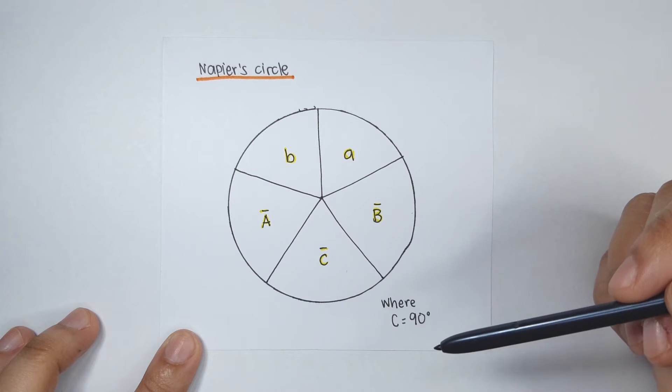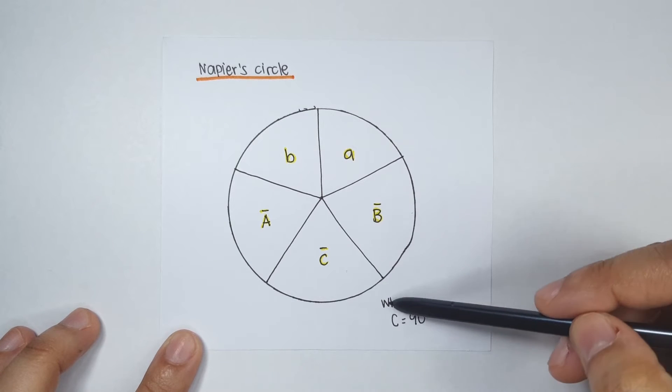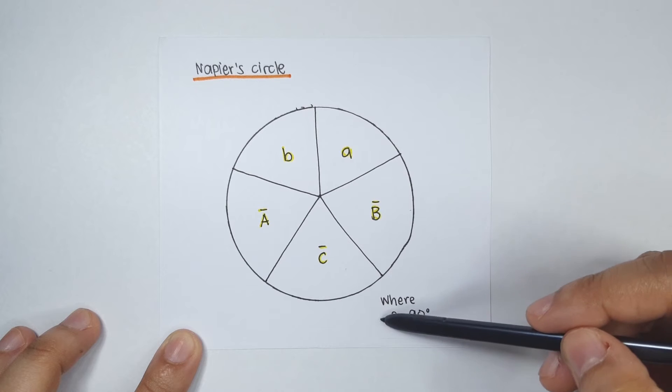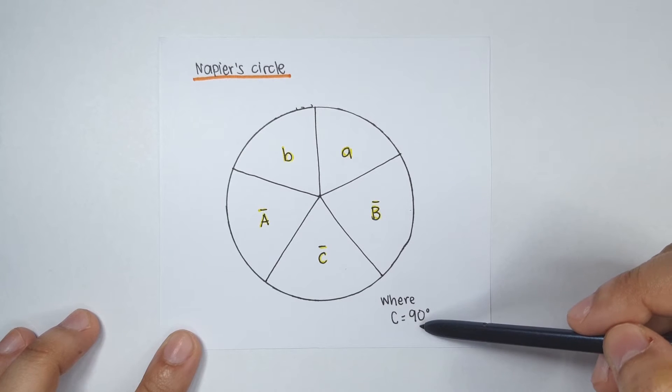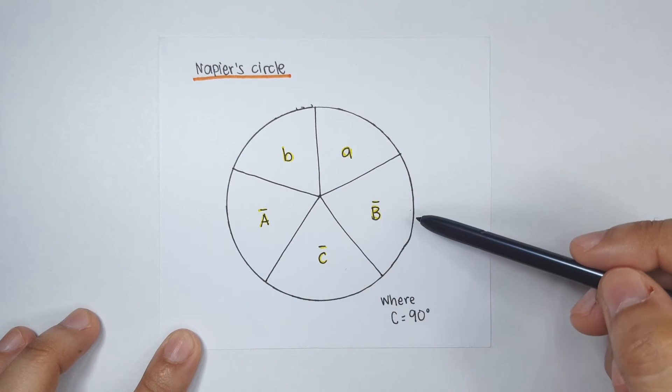Take note, we don't have capital C in the Napier's circle because we assume that angle C is the 90 degree angle. So, this is our Napier's circle.